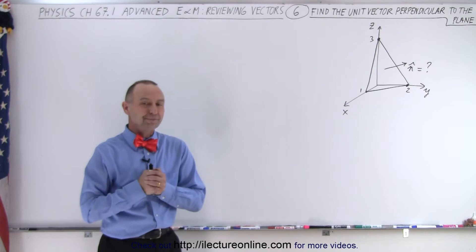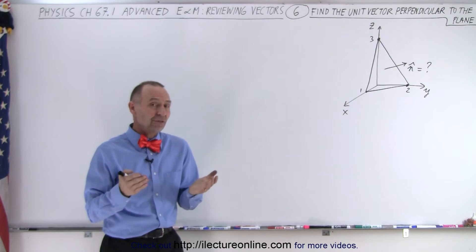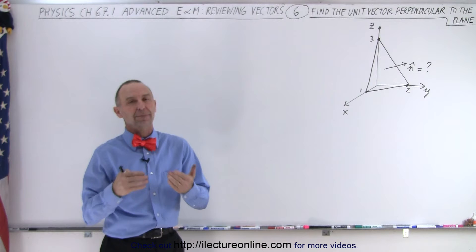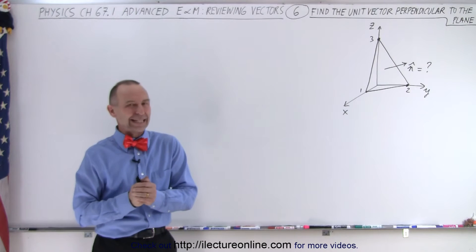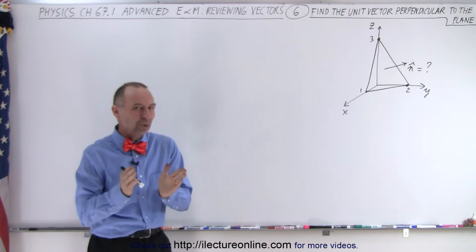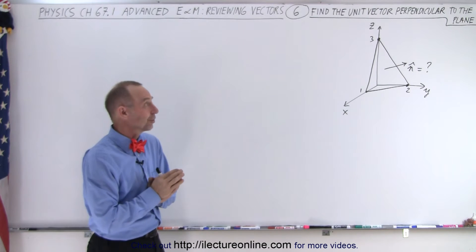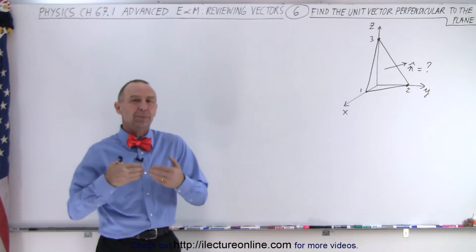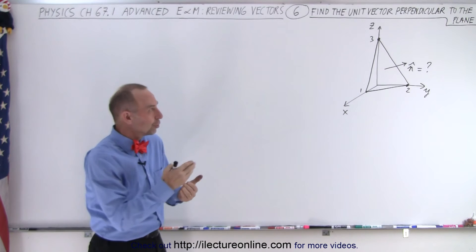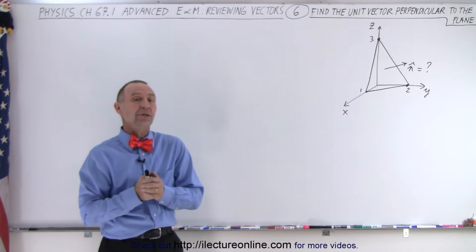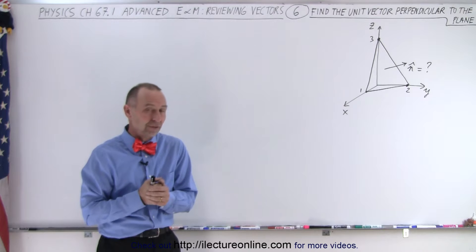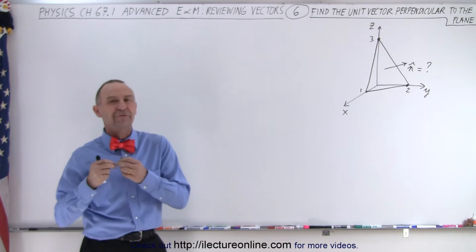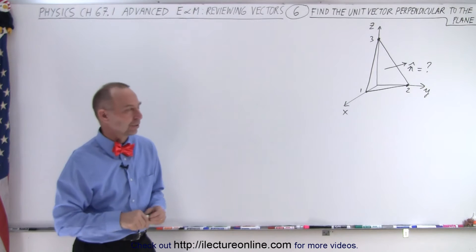Welcome to ElectronLine. In the previous video we saw how useful the dot product can be, especially trying to find the angle between two vectors. But let's say that we're trying to find the perpendicular unit vector to a plane in three-dimensional space. For that, we could use the properties of the vector product.